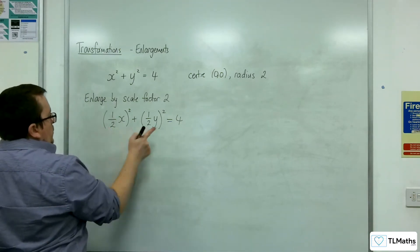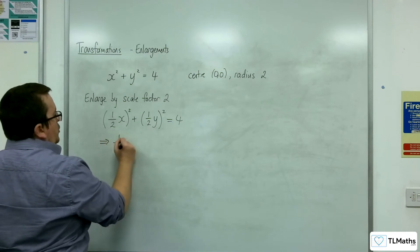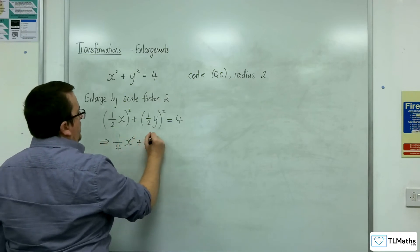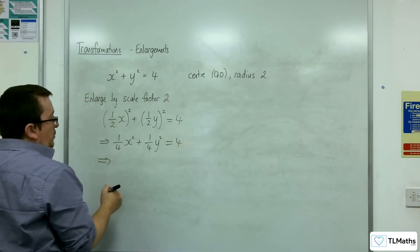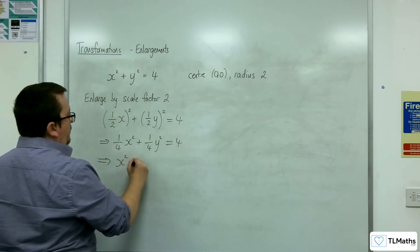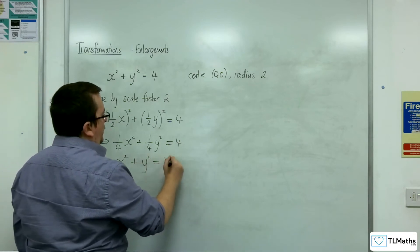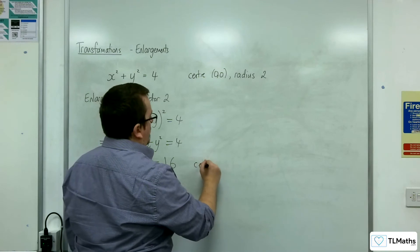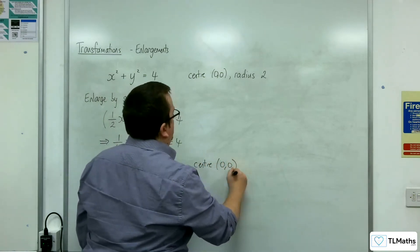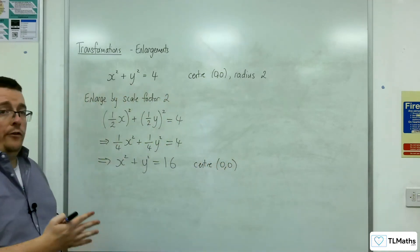So when we do that, I'm going to have one quarter x squared plus one quarter y squared equals 4. Multiply through by 4, and we get x squared plus y squared equals 16, which is a circle centred at the origin with radius 4.